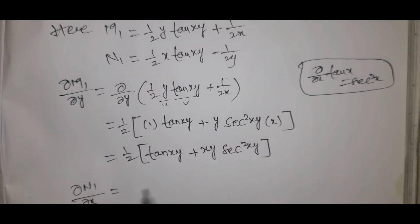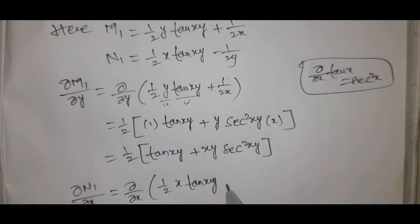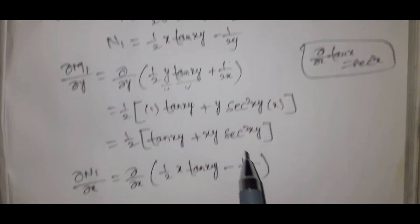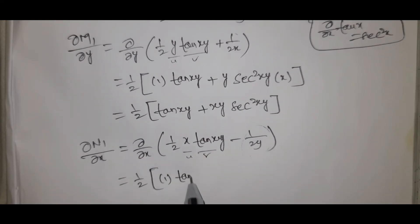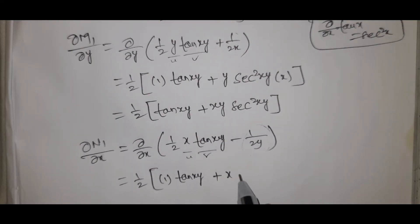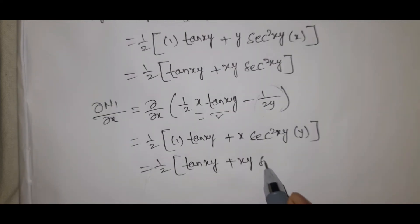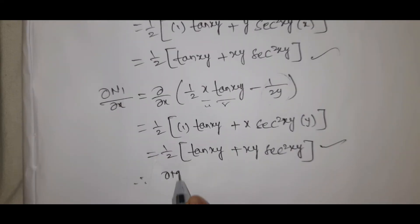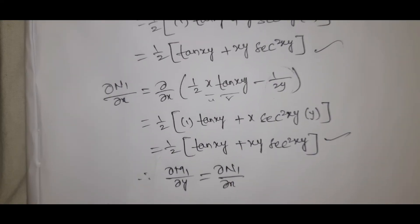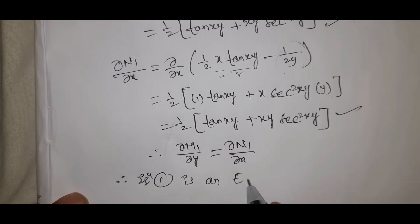Now computing ∂N1/∂x: differentiating (1/2x)·tan(xy) − 1/(2y) with respect to x. The −1/(2y) has no x, so it contributes 0. Using product rule on (1/2x)·tan(xy): we get (1/2)·[1·tan(xy) + x·sec²(xy)·y], which equals (1/2)·tan(xy) plus (xy/2)·sec²(xy). Therefore ∂M1/∂y equals ∂N1/∂x. Therefore, equation 1 is an exact differential equation.